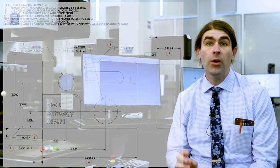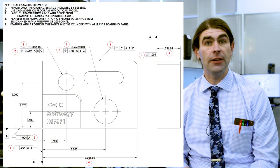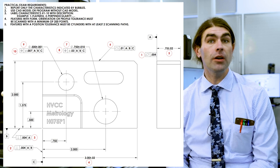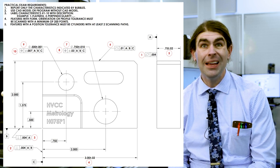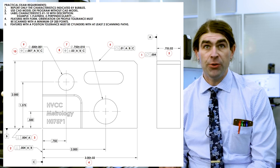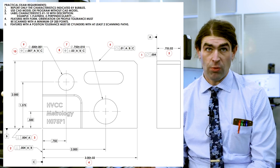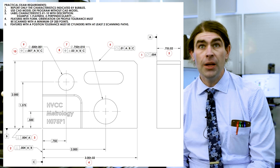In this video I'm going to program a part from start to finish. I'm going to put the part and the drawing on the screen. We've got 10 bubbles to inspect. There are a couple features on this part that are not dimensioned, so we're not going to inspect them. I'm going to use the CAD model, do a manual alignment, and run the program on the machine right here.